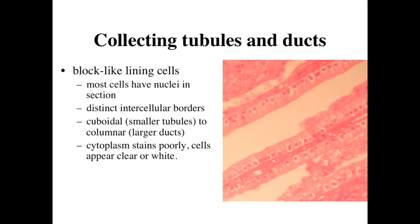In comparison to the proximal tubules and the distal tubules that we've talked about previously, the collecting tubules and collecting ducts are going to be identified by the fact that they've got distinct cell boundaries, almost like a block-like appearance to these cells. Collecting tubules and collecting ducts are going to have distinct boundaries between the cells — these intercellular borders.